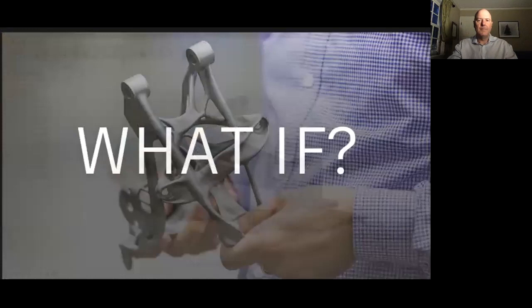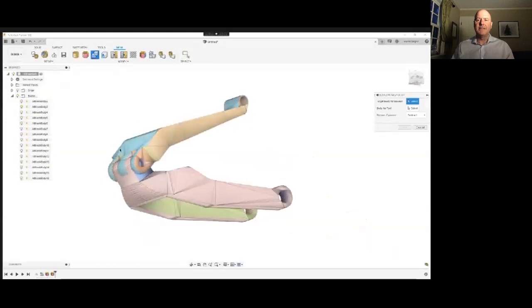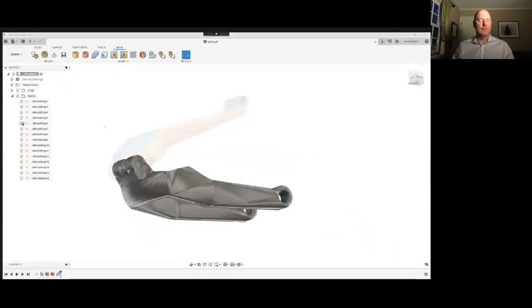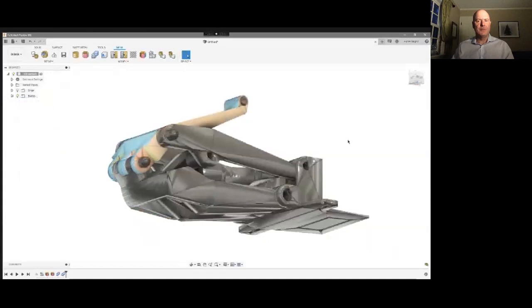As we look to tools like generative design and additive manufacturing to help us design amazing new parts, there's more. Digital tools make it easier to create replacement parts on demand. This example is showing the process of importing a scanned part into Fusion 360, preparing it and preparing it to be printed.